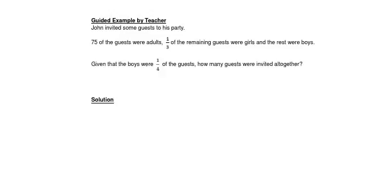John invited some guests to his party. 75 of the guests were adults. One-third of the remaining guests were girls and the rest were boys, given that the boys were one quarter of the guests. How many guests were invited altogether?